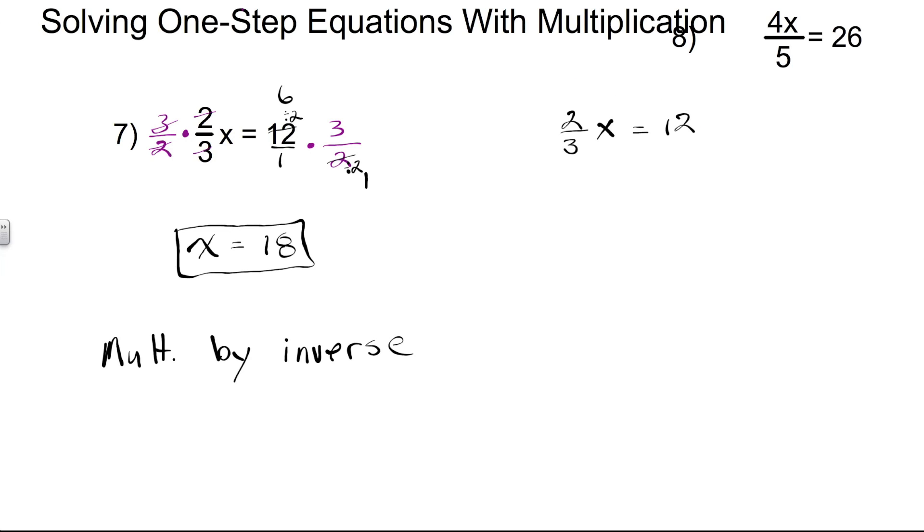Now what I'm going to do is multiply both sides by 3 first. That'll cancel the 3's on the left-hand side, leaving me 2x, or 2 times x. And on the right-hand side, 12 times 3 is 36, not 13, it's 36.